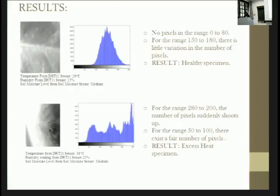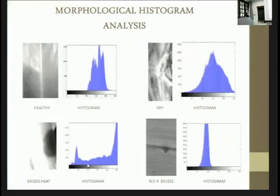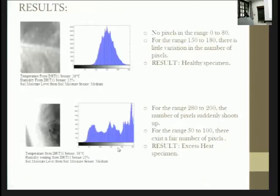Then comes the next test image that we took. This image, you can clearly see that there are dark spots, plus there is lot of pixels in the very light region here. This shows that it is excess heat comparing to this. This is how we deduce if it is not healthy, why is it not healthy based on the histogram. This basically gives us a confirmation of our histogram analysis. That is what this part of it does.